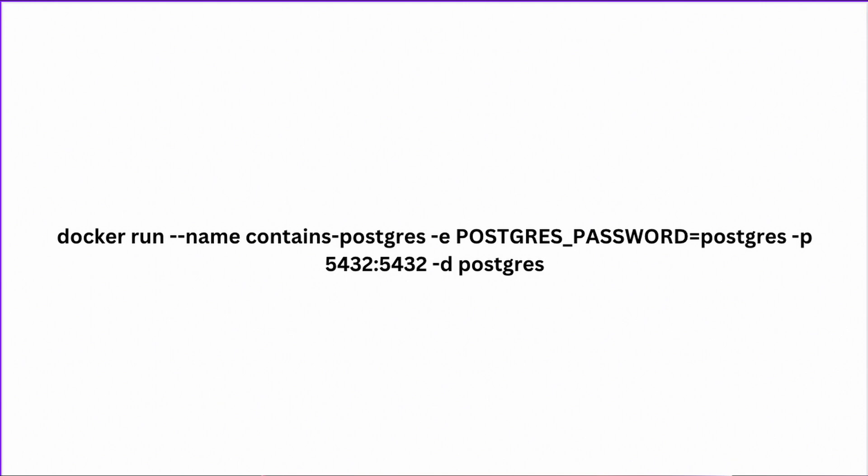The first thing we're going to do is define a name. The `--name` flag lets us specify a name for our container. If we don't specify a name, Docker will assign a long UUID. But if you want a specific name you can remember, you can use `--name` followed by the name you want. In this case, I'm calling the container `contains-postgres`, because that's what the container contains — a Postgres instance.